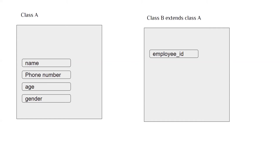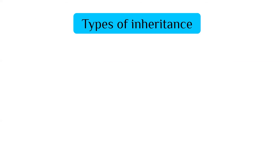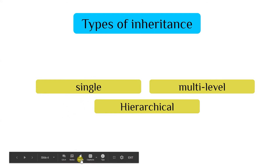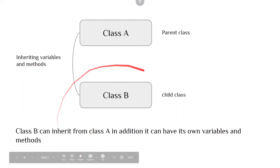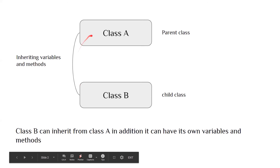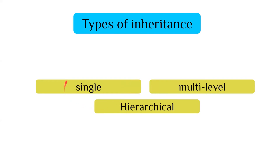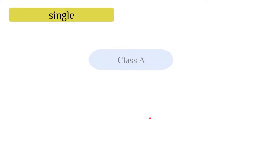Now we will see the types of inheritance. In Java, excluding interfaces, there are three types: single, multi-level, and hierarchical. There is not much difference in concept — class B will inherit variables and methods from class A in all cases. The difference is in the way the classes extend each other, which is how we differentiate single, multi-level, and hierarchical inheritance.